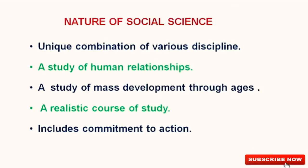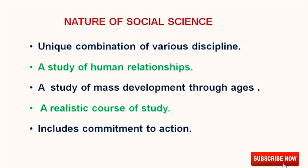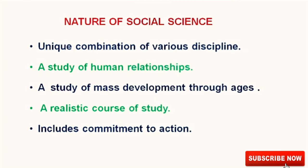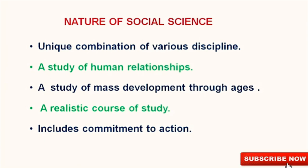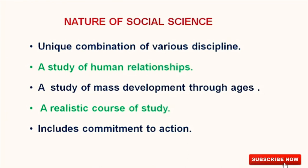Now we come to the nature of social science. The first one is about the unique combination of various disciplines. It means that though social science is treated as a separate subject, it encompasses diverse concerns of society and includes a wide range of content drawn from the disciplines of history, geography, economics, political science, and sociology. The second point is about a study of human relationship. Social science is a study of relationship between man and man, man and institutions, man and groups, relationship between man and earth, relationship between man and goods, etc.